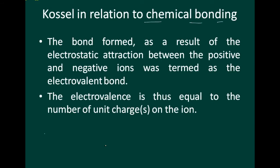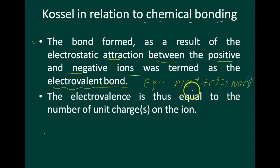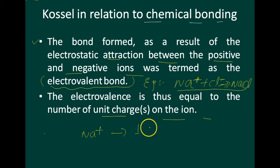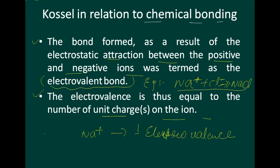To summarize: the bond formed as a result of electrostatic attraction between positive and negative ions is the electrovalent bond. Na⁺ + Cl⁻ gives NaCl, formed due to the electrovalent bond. The electrovalence equals the number of unit charges on the ion — Na⁺ has an electrovalence of one.